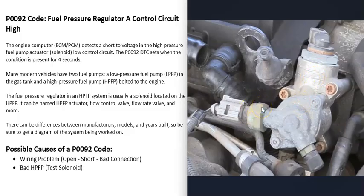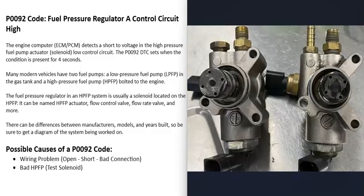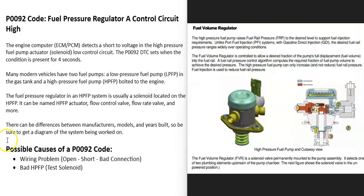These solenoids can have different names - they could be called an actuator, a flow control valve, a flow rate valve, or different things like that - but basically they're usually just a solenoid bolted directly to the high pressure fuel pump. It's a good idea to get a diagram for the specific vehicle so you know for sure what's going on. The main things that will cause a P0092 code are either a bad fuel pressure regulator - usually that solenoid - or the wiring going to it.